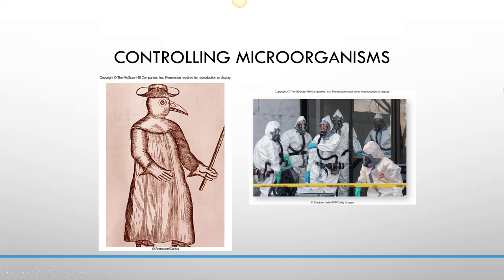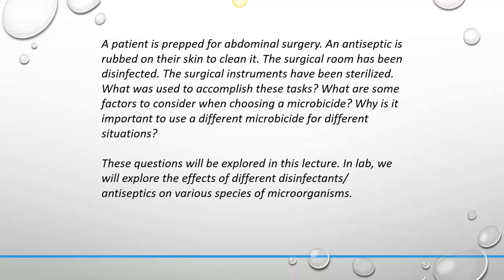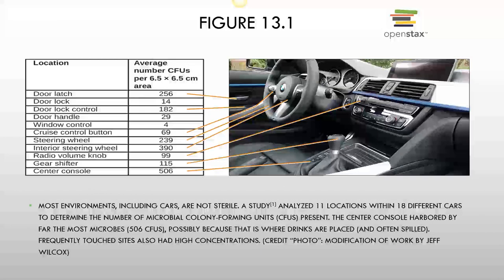Here are the current hazmat suits, which are supposed to prevent the people wearing them from getting infectious diseases. A patient is prepped for abdominal surgery — an antiseptic is rubbed on their skin to clean it, the surgical room has been disinfected, and the surgical instruments have been sterilized. What was used to accomplish these tasks? What are some factors to consider when choosing a microbicide? These questions will be explored in this lecture, and in lab we're going to explore the effects of different disinfectants and antiseptics on various species of microorganisms.